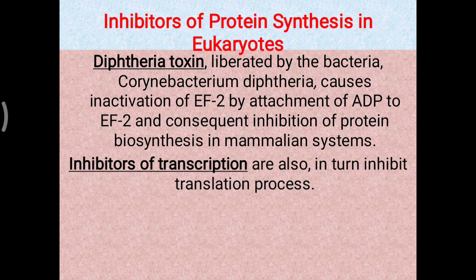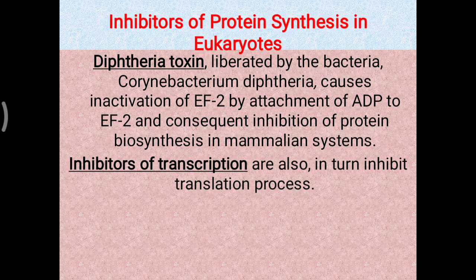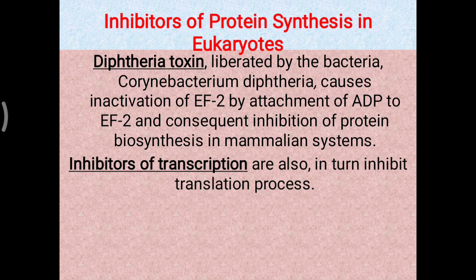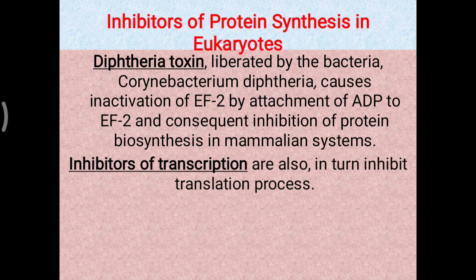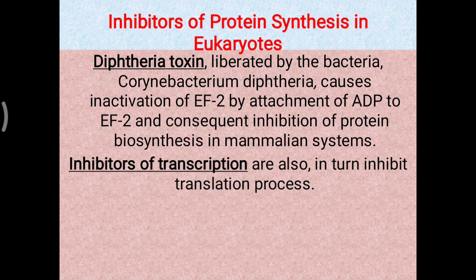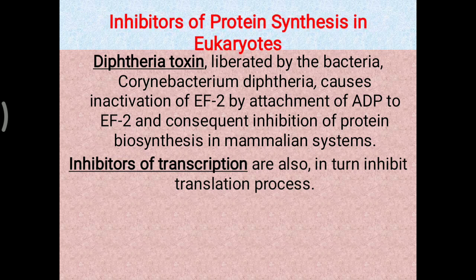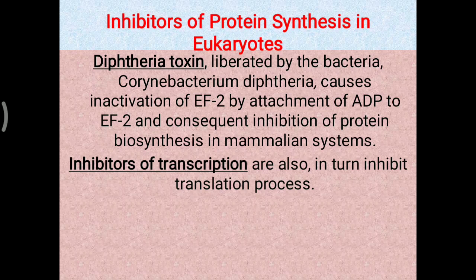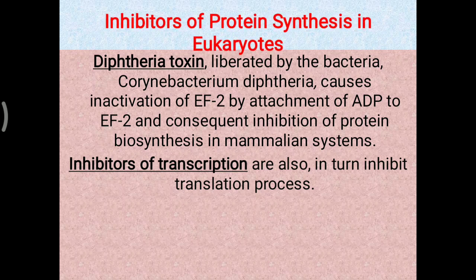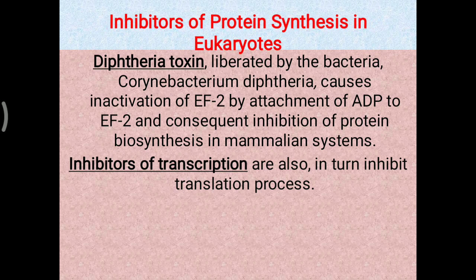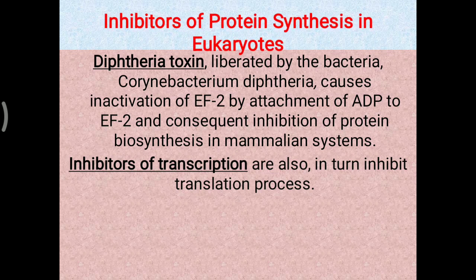Inhibitors of transcription also indirectly inhibit translation. If the preceding reaction — transcription — is not working, then the downstream reaction — translation — cannot occur either. So inhibitors of transcription are also able to work as antibiotics by indirectly blocking protein synthesis in bacterial or any cell. That covers the most important aspects of the inhibition of translation.